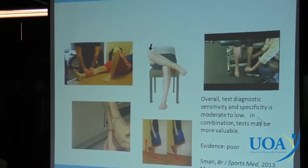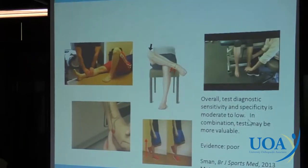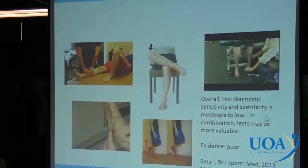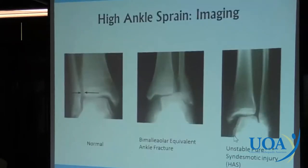As far as the evidence in the literature goes, the evidence is poor. A meta-analysis described in 2013 showed the overall accuracy of these tests is not very good — in combination they may be better, but the evidence is not great. So imaging is very important if you suspect a high ankle sprain; we need to know if it is unstable or stable, because that changes our management.